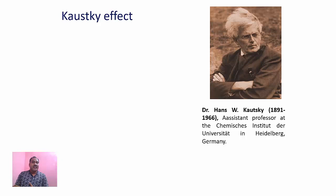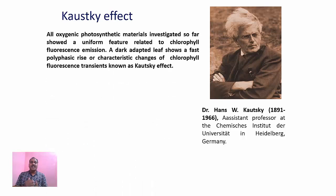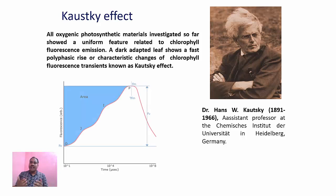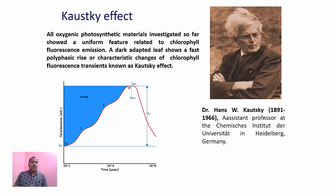These instruments are based upon one principle, known as the Kautsky effect. The Kautsky effect states that almost all oxygenic photosynthetic materials investigated so far show a uniform feature related to chlorophyll fluorescence emission. When a dark-adapted leaf is exposed to high light, a characteristic polyphasic rise of chlorophyll fluorescence transients is seen — that is known as the Kautsky effect. If we plot the chlorophyll fluorescence emission over one second versus time, this fluorescence transient is polyphasic.